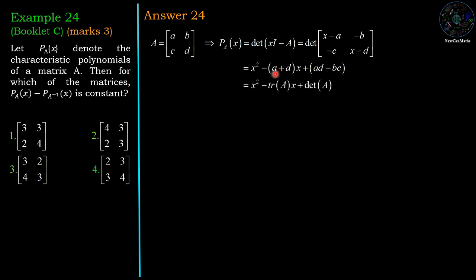You can rewrite in the form x squared minus trace of A, where a plus d is trace of A which is sum of diagonals, and ad minus bc represents the determinant of A. So this is the generalized form of characteristic polynomial of 2 by 2 matrices.